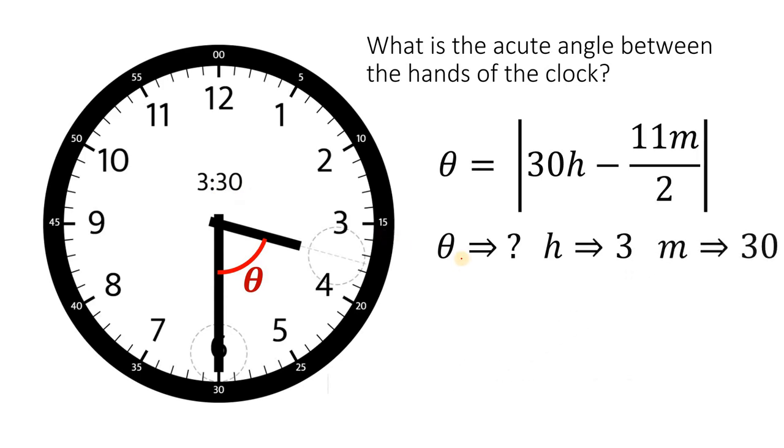What we're going to do is substitute all those given values into our formula to find the acute angle between the hands of this clock. Let's substitute: h equals 3 and m equals 30.